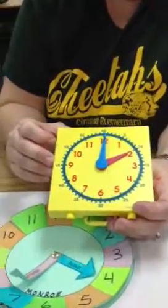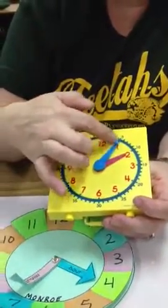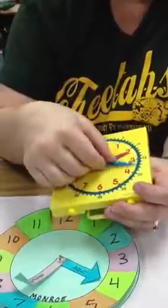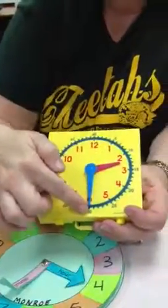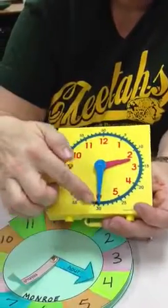They also need to make sure that when they're telling time, let's say if it's 2:30 or half past 2, they need to learn that.